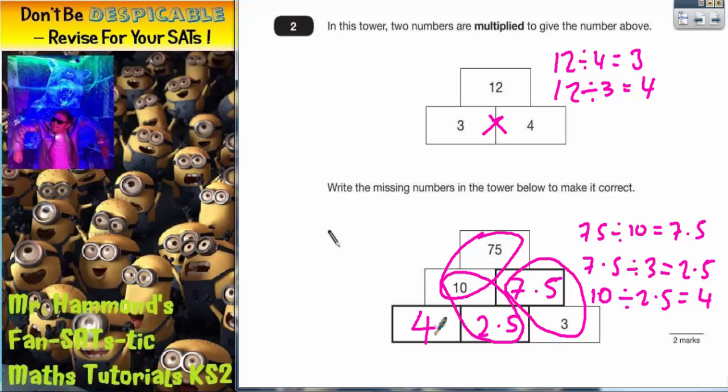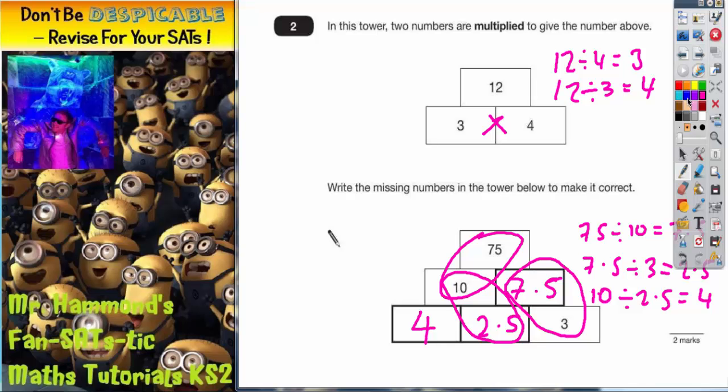Quick check: 4 lots of 2.5 gives us 10, so that works. 3 lots of 2.5 gives us 7.5, so that works. And 10 lots of 7.5 gives us 75, so everything seems to work.